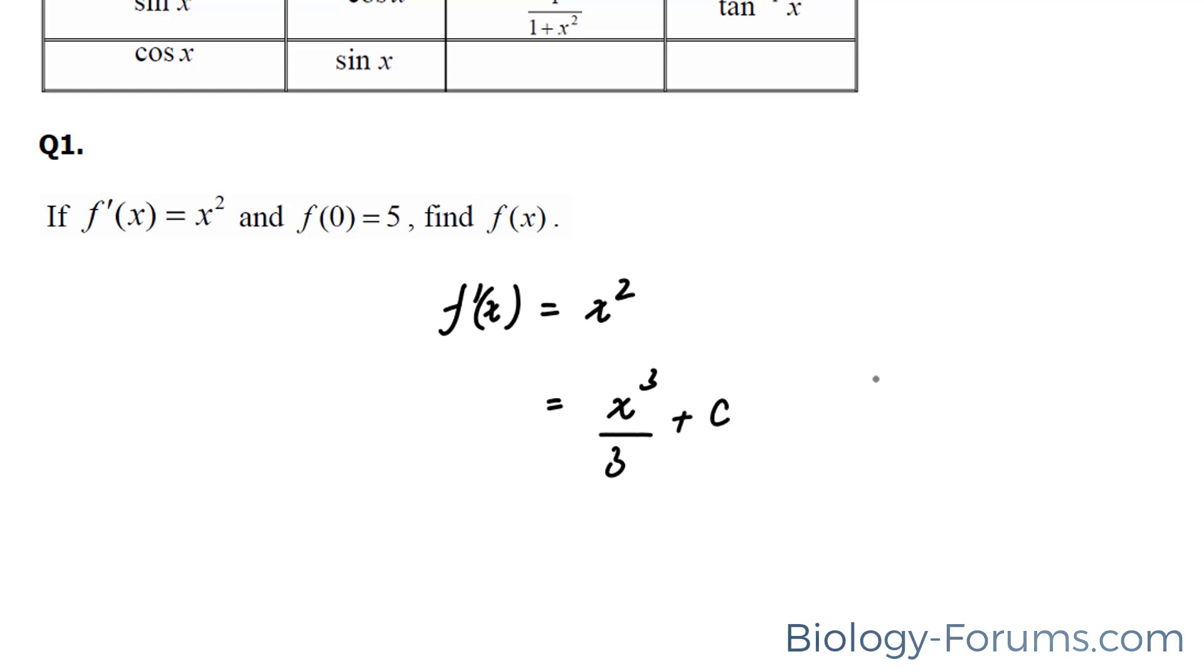where c is a constant that may or may not have existed. We're also told that f at 0 is equal to 5, and the way we interpret this is we set all x values equal to 0 and make the equation equal to 5. So we have 5 is equal to 0 to the power of 3 over 3 plus c.